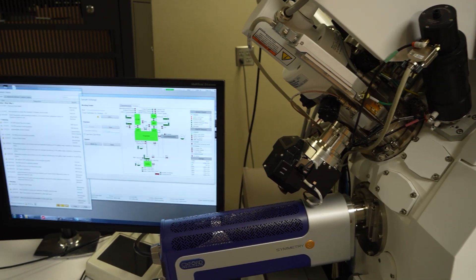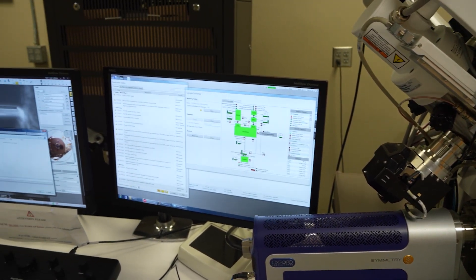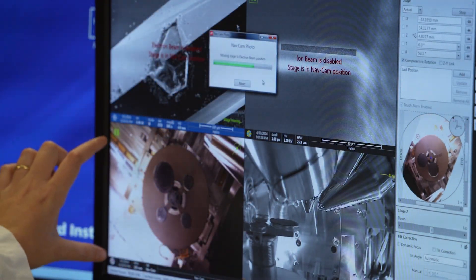At the Mag Lab, scientists use this powerful instrument to examine how materials behave at an atomic level, a closer look at the matter that makes up our world.